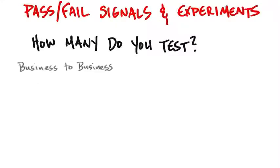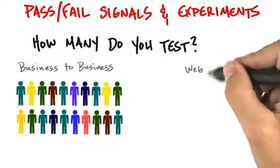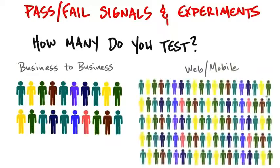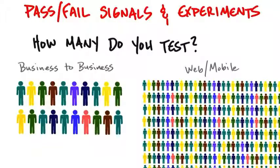In a business-to-business enterprise sale, you might get away with talking to less than 20 customers, and that's a great number. But if you have a mobile or web app, you want to talk to hundreds if not thousands of customers. Obviously you can't personally interview all of those like you could in the enterprise, so you want to reach them virtually. The number you want to get to is really an order of magnitude or two different than if you were doing B2B direct sales.